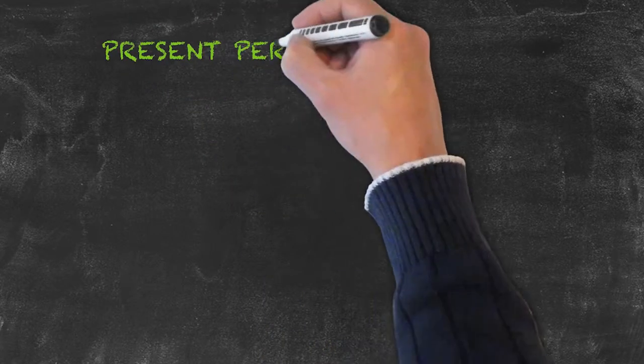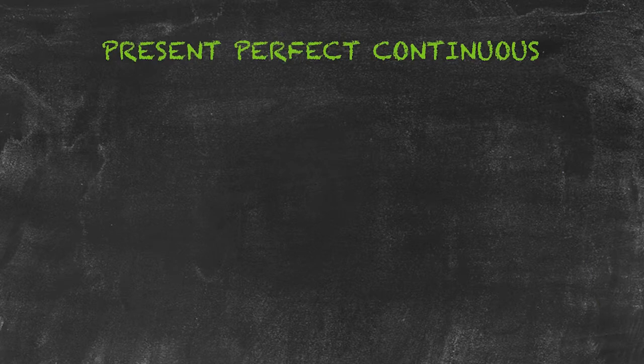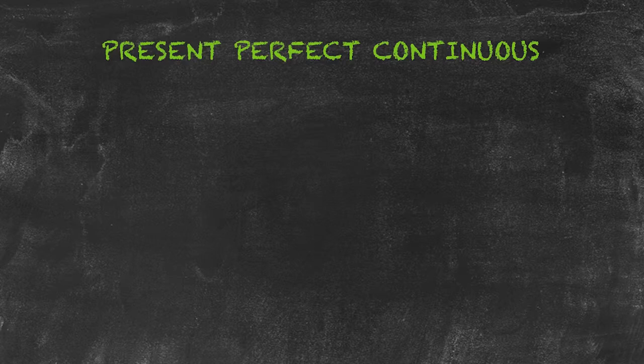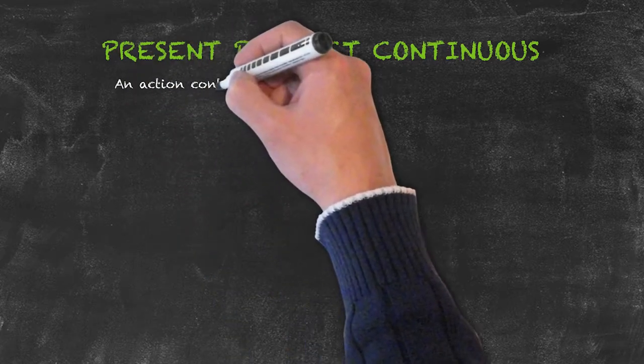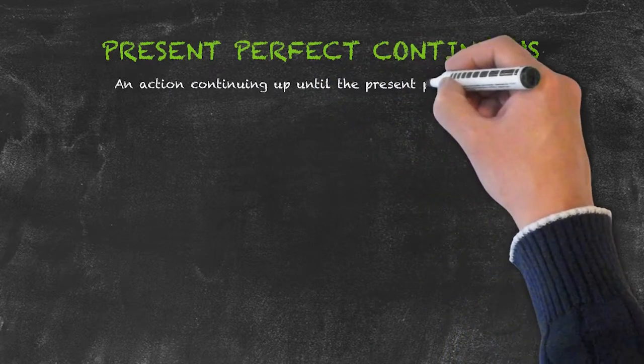And now we'll have a look at the present perfect continuous tense. As its name suggests, what we're going to do is combine the present continuous usages and the present perfect usages into a tense that basically expresses the fact that we've got an action continuing up until the present point in time.